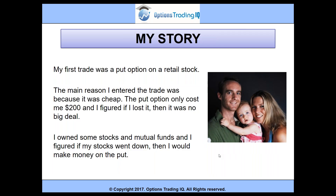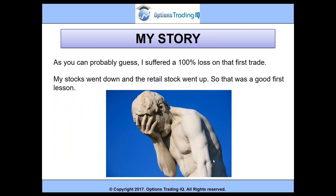So the first trade that I put on was on a retail stock, and the main reason I entered the trade was because it was cheap. The put option was only going to cost me $200, and I figured if I lost it, it was no big deal. At the time, I owned some stocks and mutual funds, and I figured if my stocks went down, I would make money on the put. As you can probably guess, I suffered a 100% loss on that first trade. The stocks that I owned went down, but the retail stock that I had the put on went up.